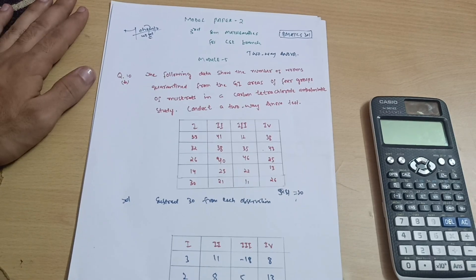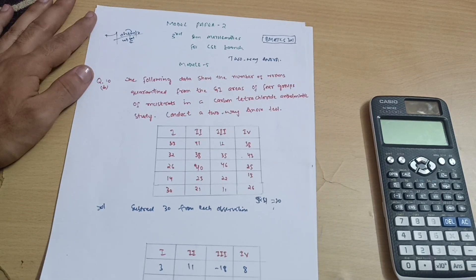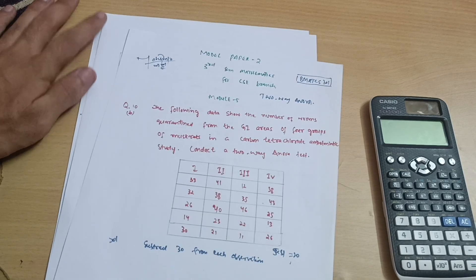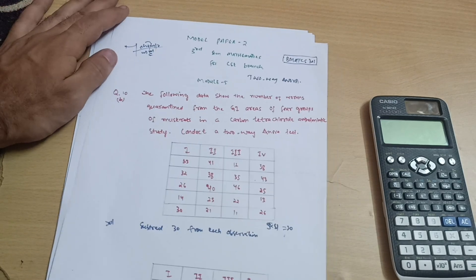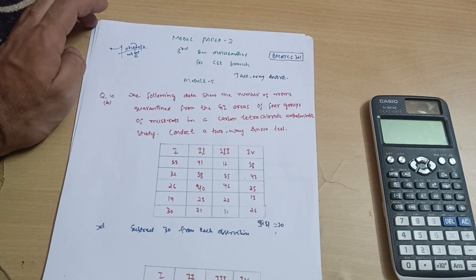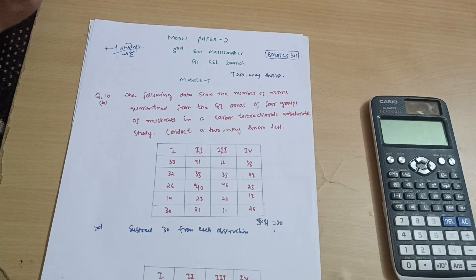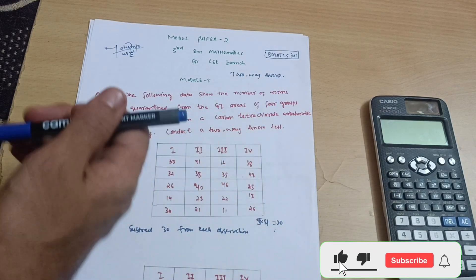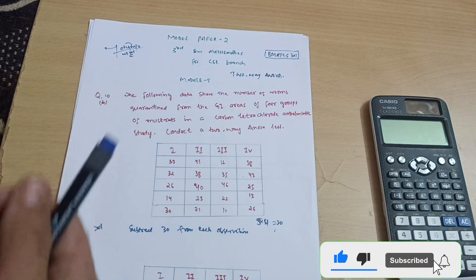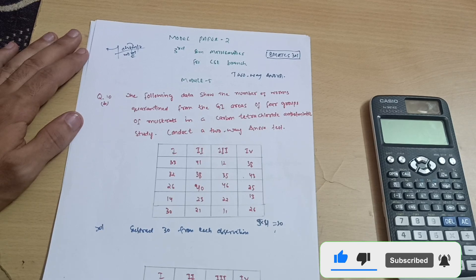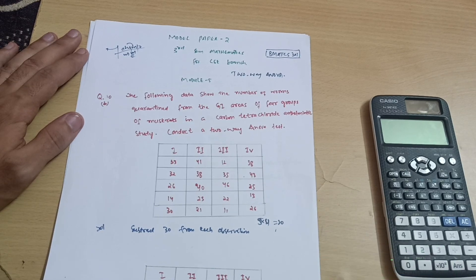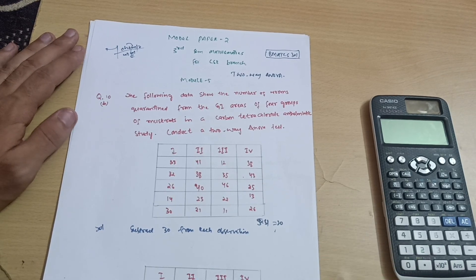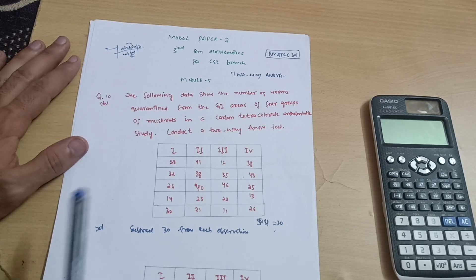Hello everyone and welcome back to my channel. We are discussing the model question paper for mathematics for CSC stream students and allied branches. We have discussed various problems so far. Today we will discuss two-way ANOVA. We have already discussed one-way ANOVA — if you haven't watched it yet, the link is in the description box.